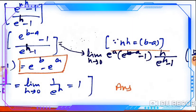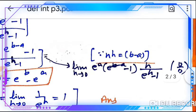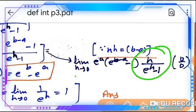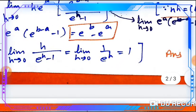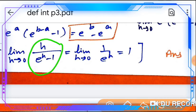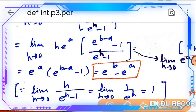We have e^a · [e^(b−a) − 1] times h / [e^h − 1]. We need to take the limit as h tends to 0. Since h / (e^h − 1) is a 0/0 form, applying L'Hôpital's rule gives 1. So the result is e^a · [e^(b−a) − 1] · 1, which simplifies to e^b − e^a. This is our answer.